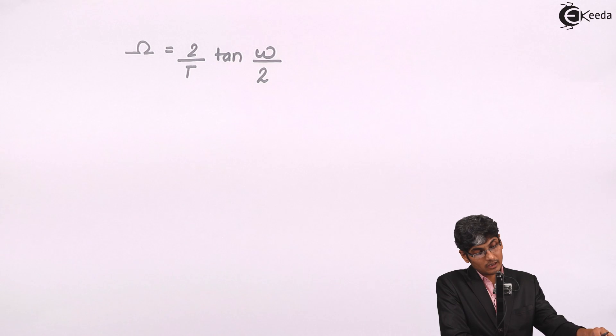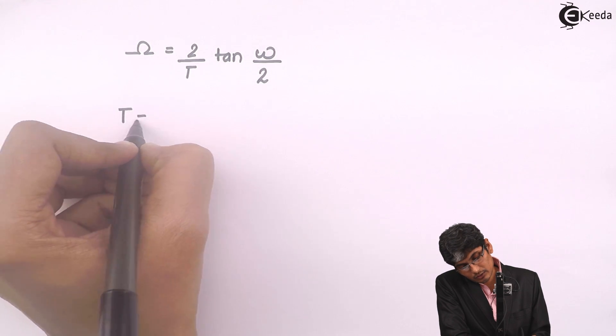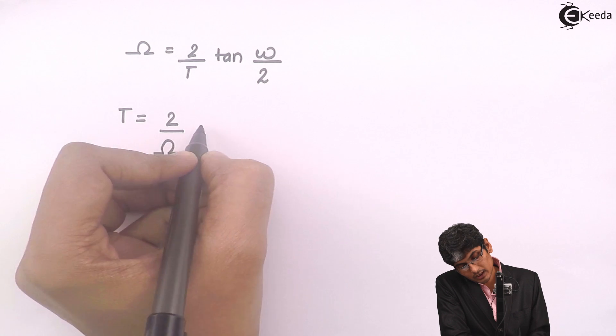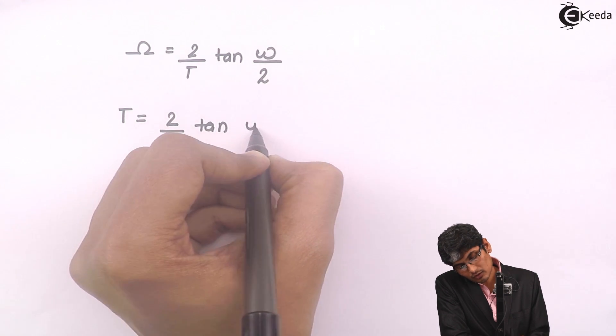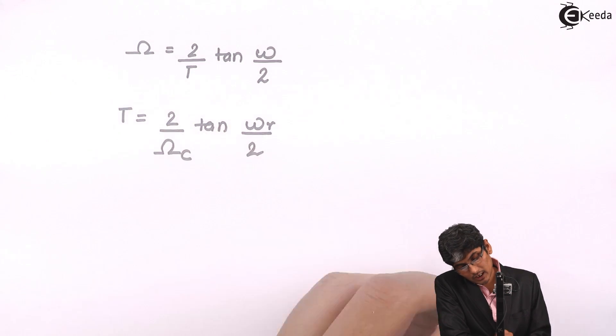So let us rearrange this equation. I want T, so I will put T over there. Then 2 by omega tan of omega by 2. So here, I will use omega C and omega R.